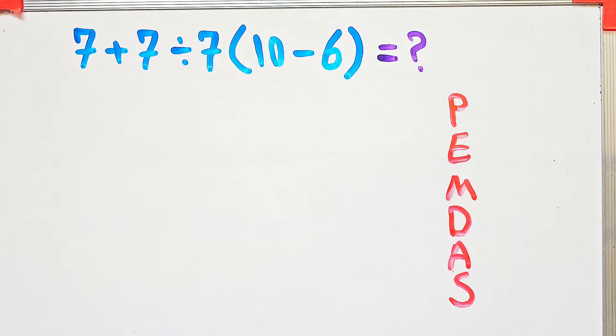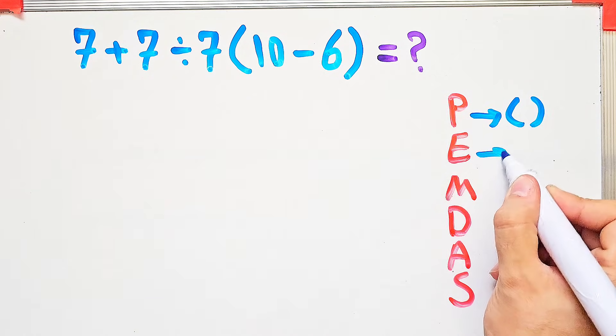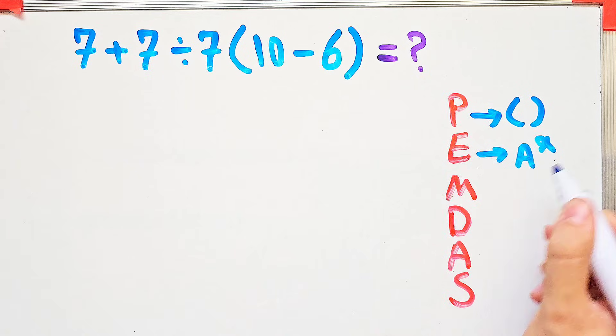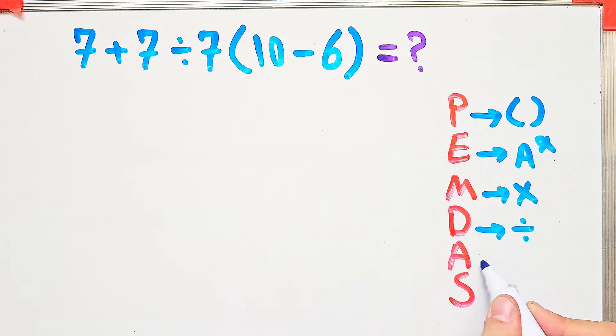In this rule, P stands for parentheses, E stands for exponent, M stands for multiplication, D stands for division, A stands for addition, and S stands for subtraction.